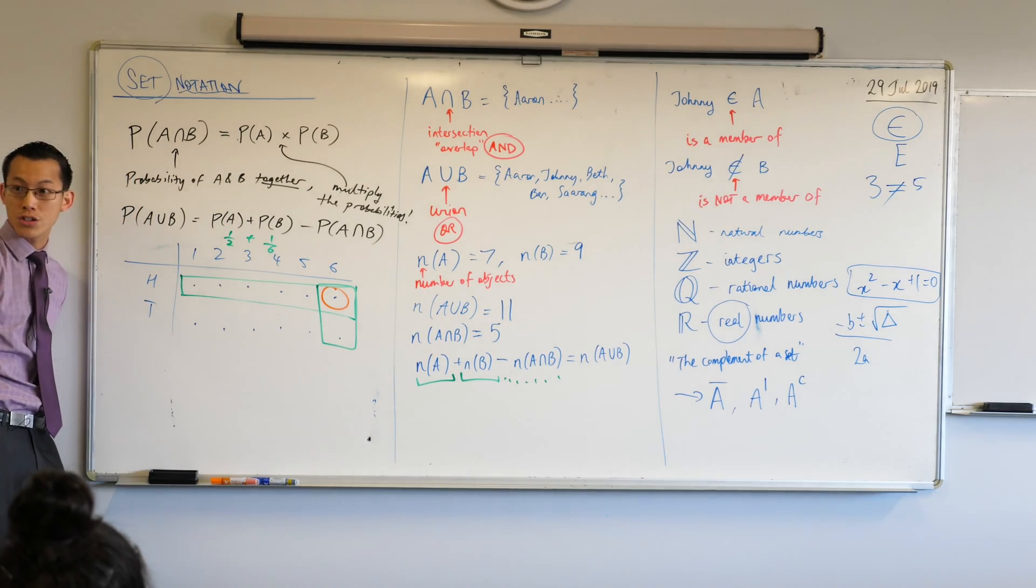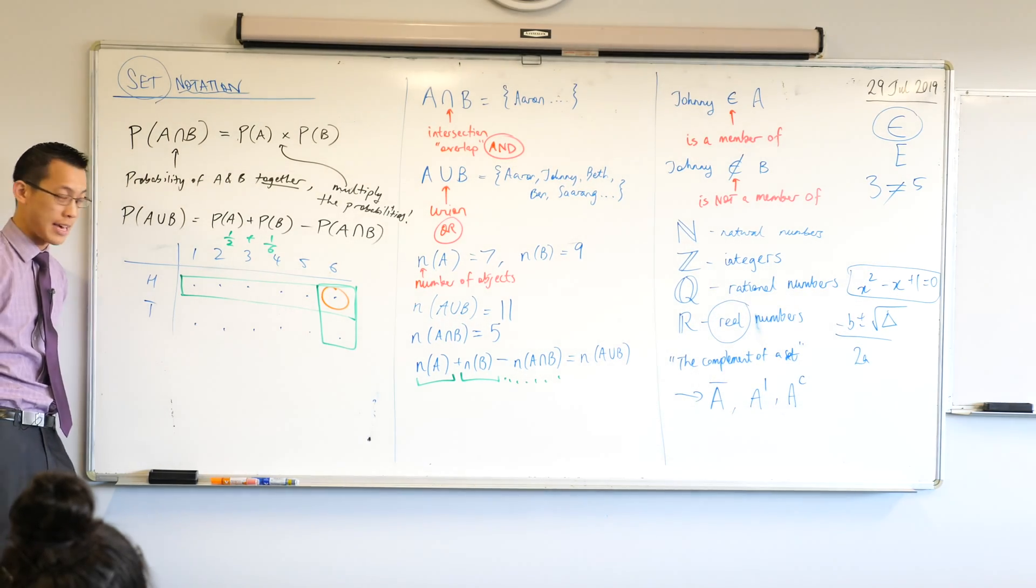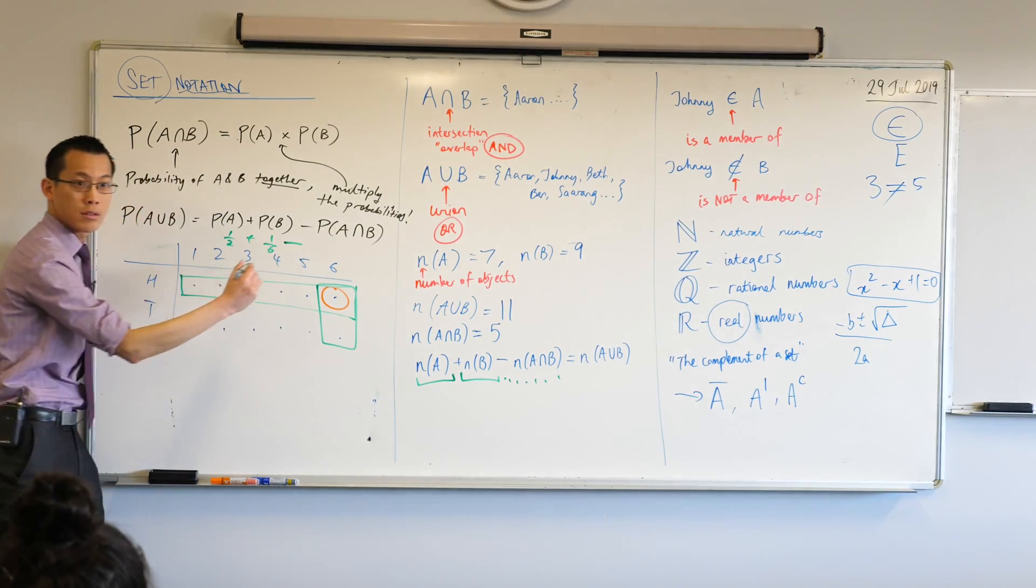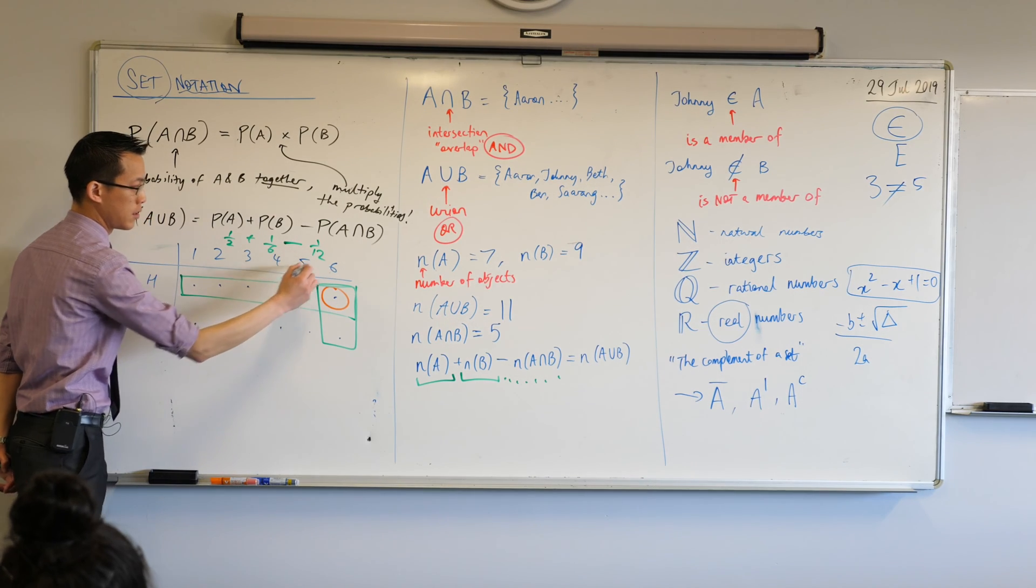But look what I've got there in orange. Do you see that? See what I've got there in orange? Do you see how I've double counted that in my green thing? I've counted it once in the row and once in the column. So, that's why you have to subtract, and we get 1 over 12.